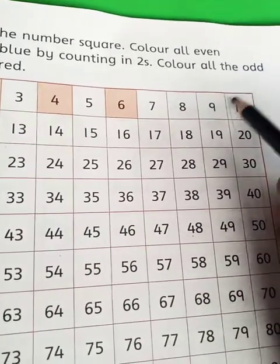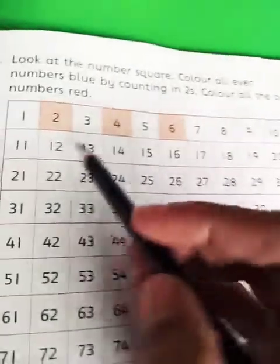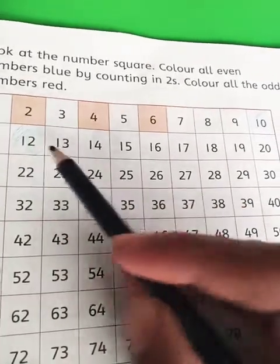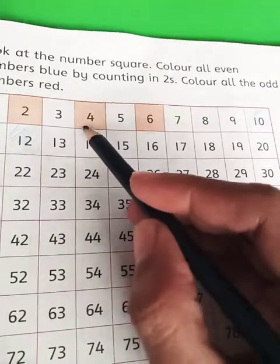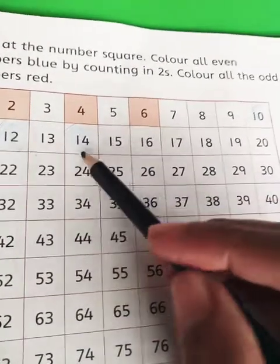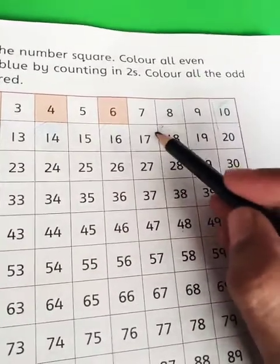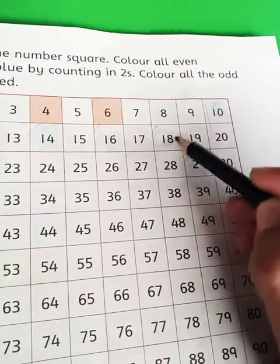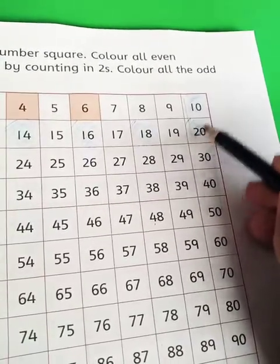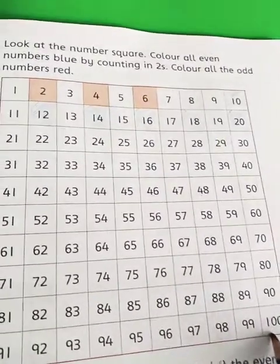After 8 the number will be 10 which will be an even number. After 10 jumping in 2s will get 12 which is also an even number. After 12 we will jump in 2s and 14 will be the even number. After 14, 16 is the even number. After 16, 18 is the even number. And after 18 jumping in 2s we will get 20 which is also an even number. In the same way you will complete all this grid.